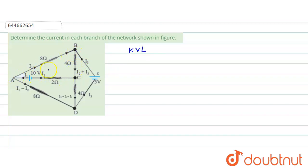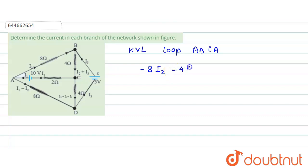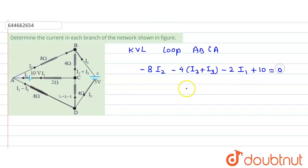First, we select loop ABCA and apply KVL. Moving in this direction, we are moving in the direction of current, so potential is dropped: minus 8·i2. Then from here, also moving in the direction of current: minus 4·(i2 + i3). Then moving in the direction of current: minus 2·i1. Moving from negative to positive, we gain potential: plus 10. This equals zero.